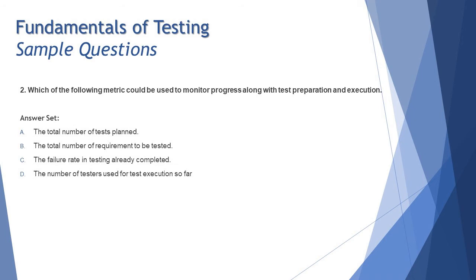Let's look at the second question which is again sent by the same person. Which of the following metric could be used to monitor progress along with test preparation and execution. Again this is strictly a test manager level question advanced level certification where test manager is the one who selects the matrices. If you remember your chapter 5 the role of a test manager and role of a tester. So there you will find that selecting matrices suitable matrices or adequate matrices is a responsibility of the test manager.